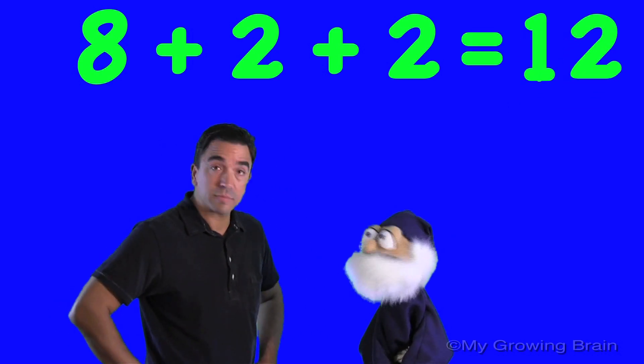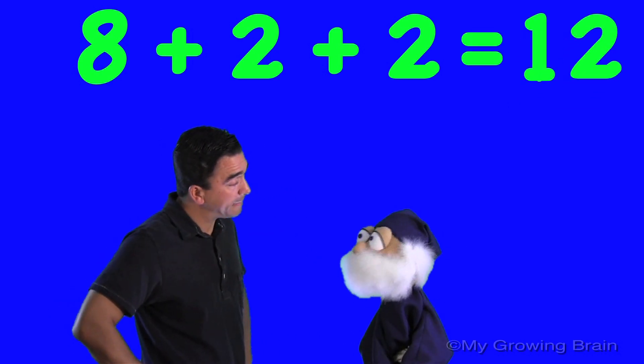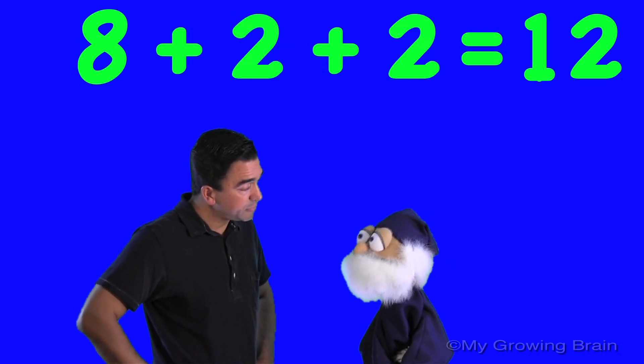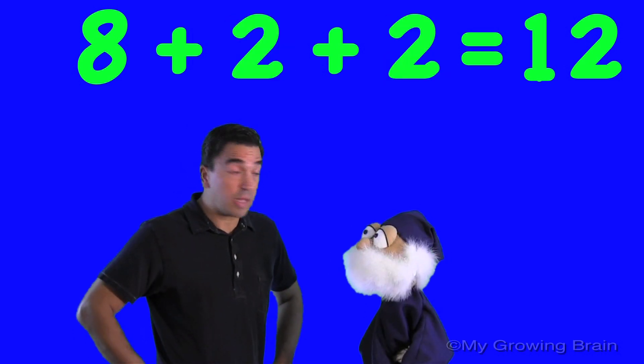Yeah. I would do it slightly differently. Oh yeah? Well, how would you do it, Duncan? Well, since we have two twos, I would start with the doubles. Oh, okay. Well, tell us.